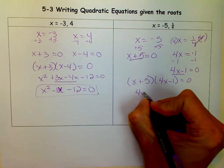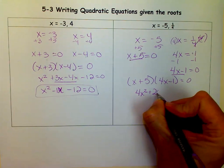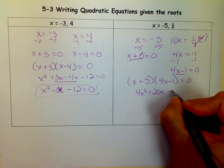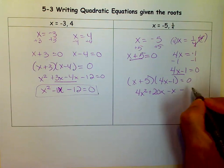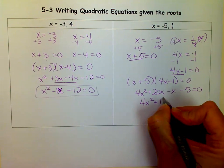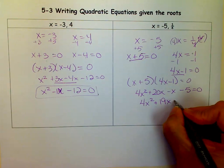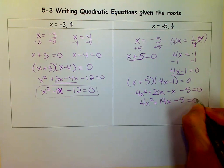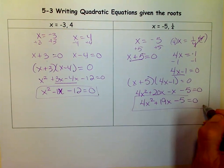x times 4x is 4x squared plus 20x, my outers, my inners, minus x, my lasts negative 5. So if I simplify combining like terms, I get 4x squared plus 19x minus 5 equals 0. And that is the quadratic equation.